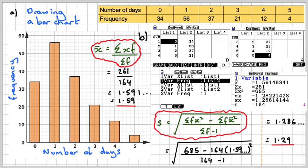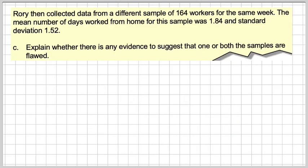But in the actual exam, if you write that and that, you will probably get it marked right and get one mark. We now get the next part of the question. Rory collected data from a different sample of 164 workers for the same week. The mean number of days worked from home for this sample was 1.84, and the standard deviation was 1.52. Explain whether there's any evidence to suggest that one or both samples are flawed.